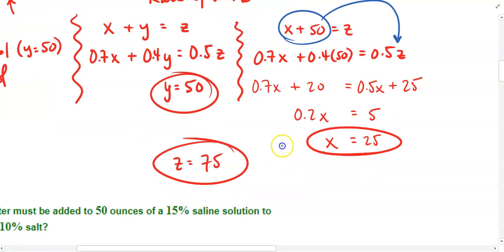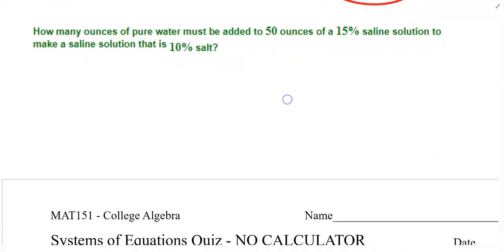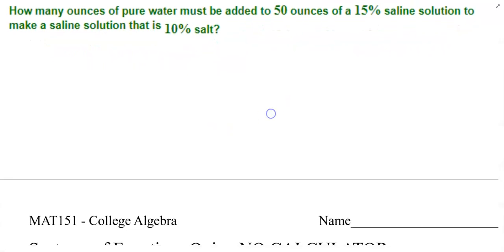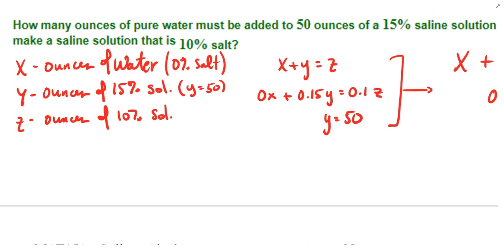I have one more example down here. I think I'll pause the video for this one and see how you would do working on it on your own. I would recommend that you pause the video now and resume playback in a moment to check your work. In this instance, I took the same approach. I noticed that the question was asking how many ounces of pure water must be added. I let that question represent my first variable, x, the ounces of water.